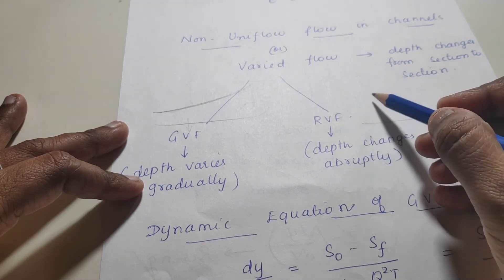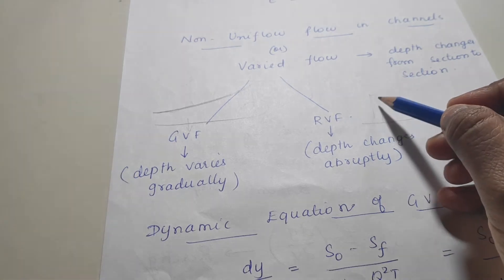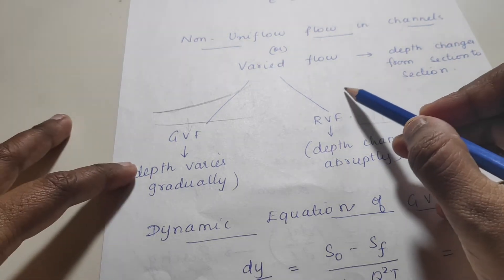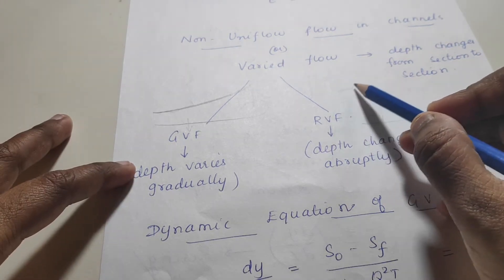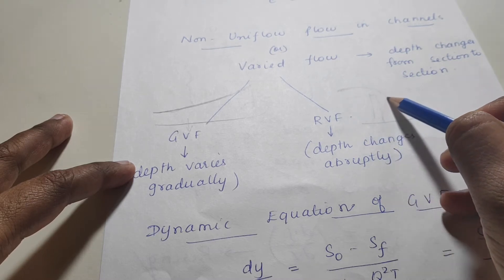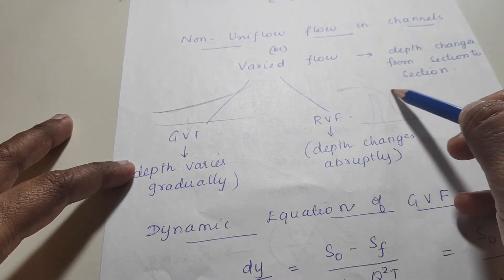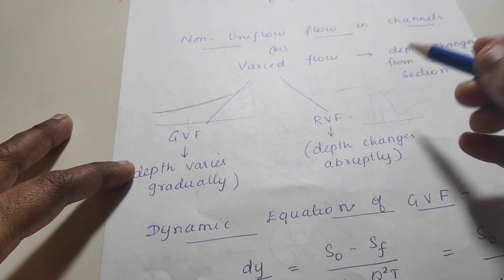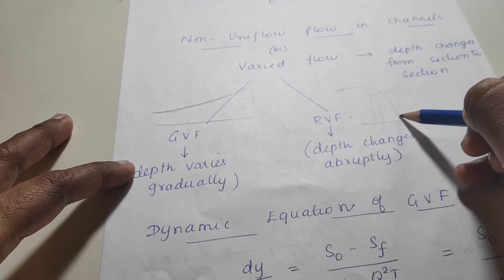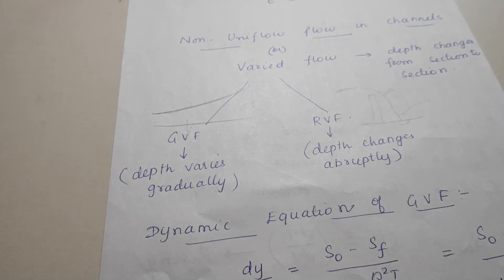In rapidly varied flow, there is a sudden change in depth. For example, if there is a weir or a gate, the water flows suddenly and then increases again. In this case, the change in depth over a particular length occurs suddenly — that is RVF.